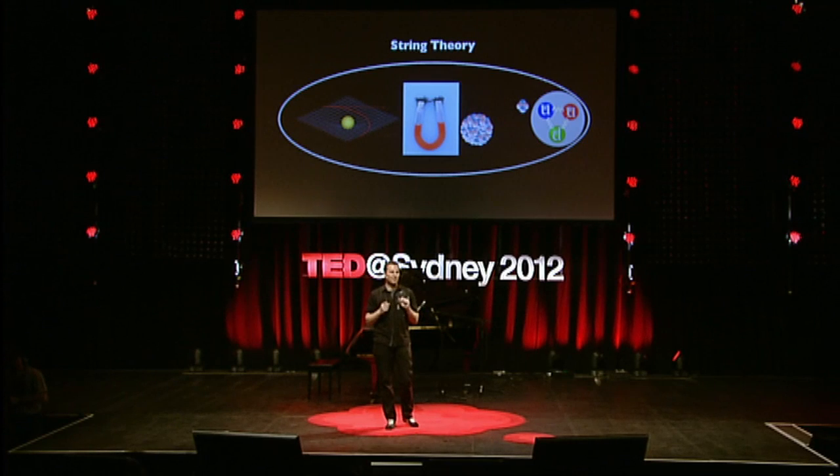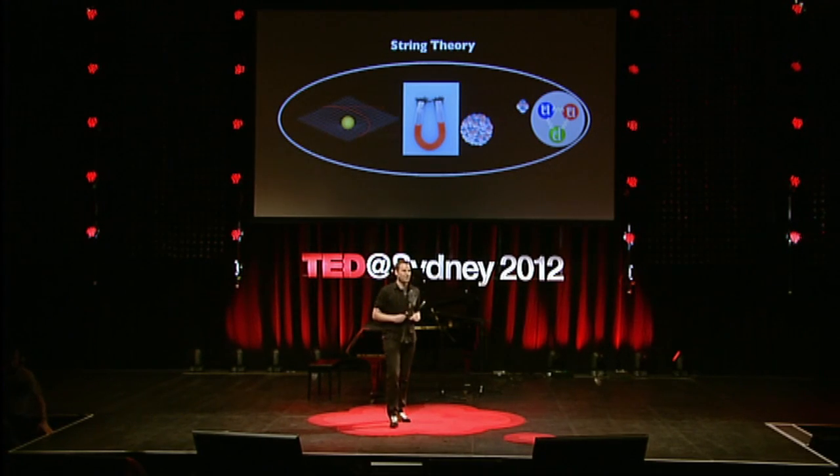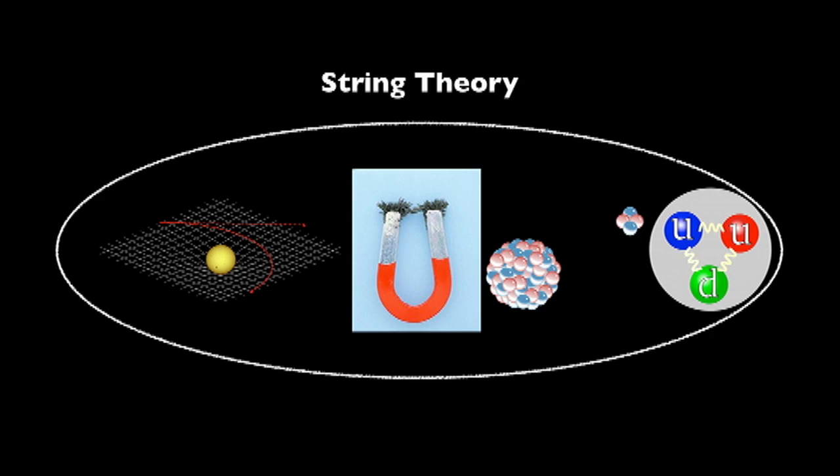The exciting part about introducing extra dimensions is that this could be a first hint towards string theory. String theory is a theory which is based on ten dimensions, and it attempts to unify the four forces of nature: gravity, the electromagnetic force, the weak force — which is responsible for radioactive decay — and the strong force, which keeps the nucleus of an atom together. All these forces have their own set of equations, and string theory attempts to unify them into one big grand unified theory. It's one of the biggest dreams in physics.